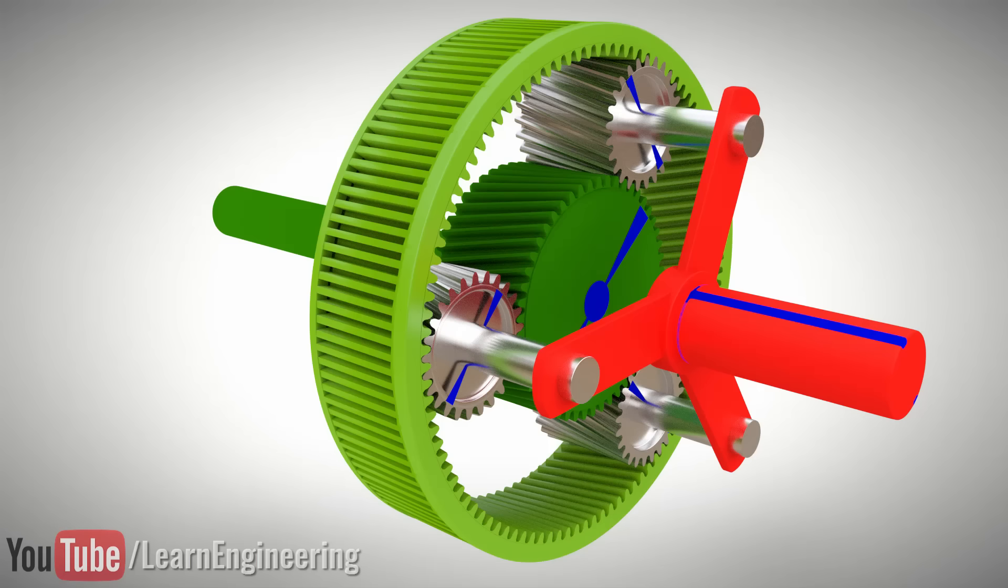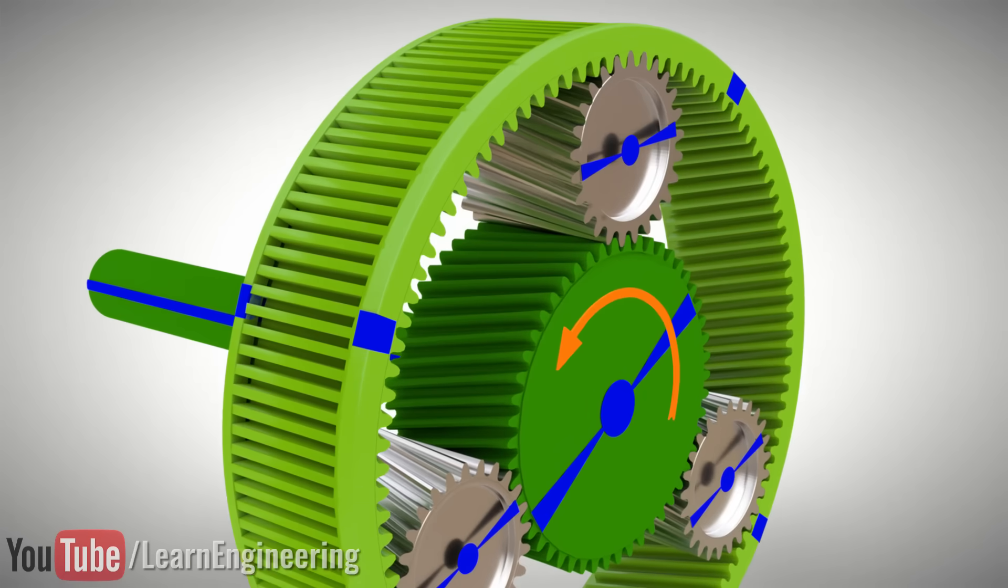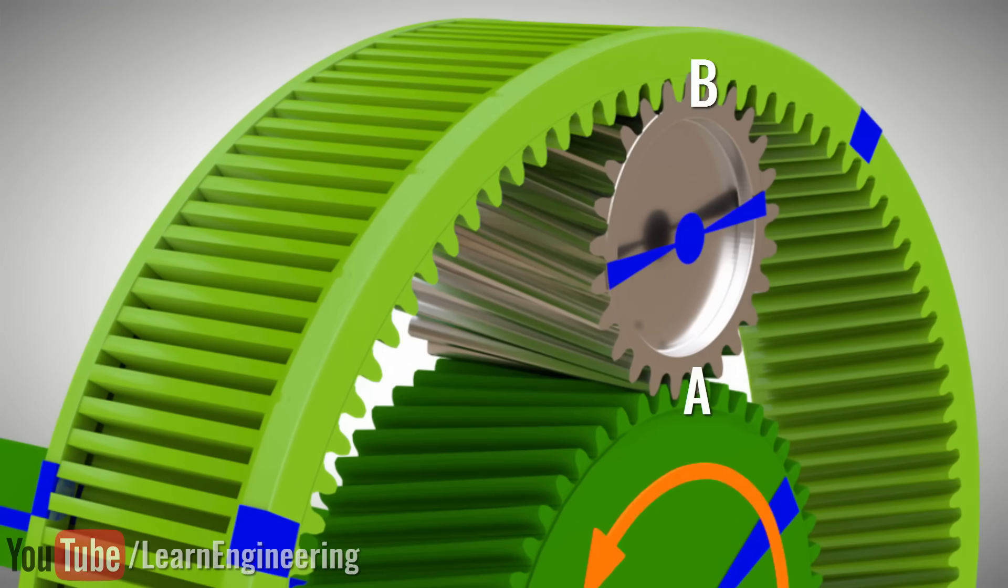Assume that the ring gear is held stationary and we rotate the sun gear. Think of what happens to the planet gears. At point A, the planet gear should have a certain speed, and at point B, the speed should be zero as the ring gear is stationary. However, how are both of these conditions possible at the same time?